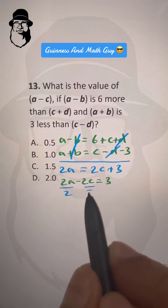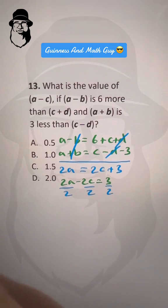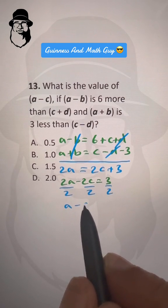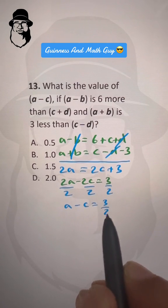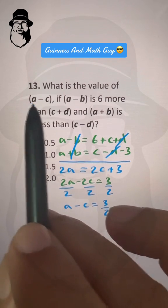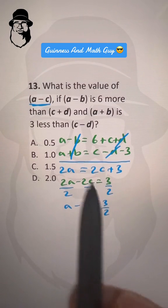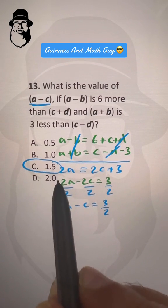2a over 2, 2c over 2, 3 over 2. So it becomes (a - c) equals 3 over 2, and that's what we want: (a - c). 3 over 2 means 1 and a half, so that's our answer.